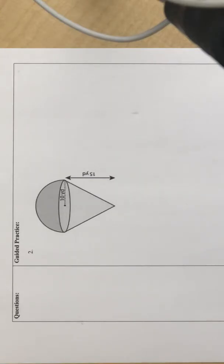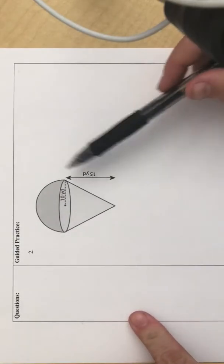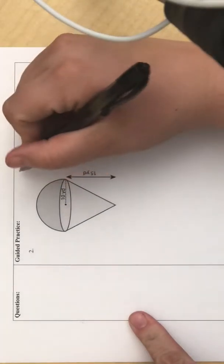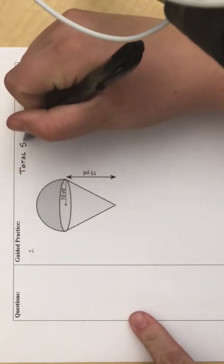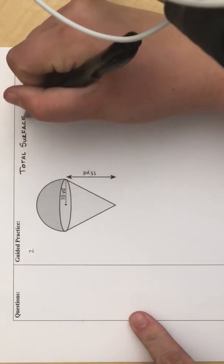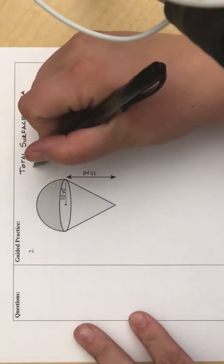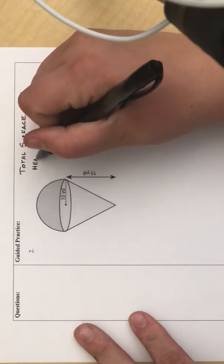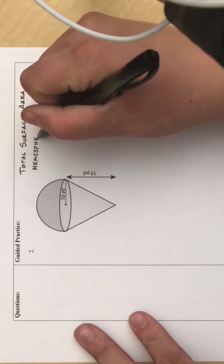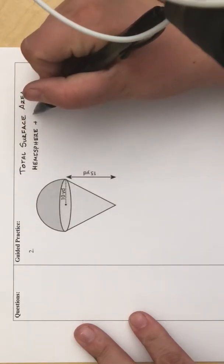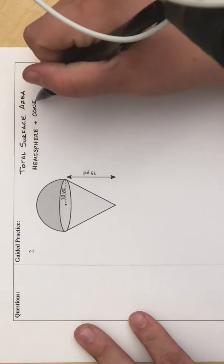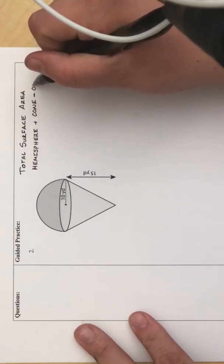Today we will be finding the surface area of this compound shape. What we have here is a hemisphere on top of a cone. So in order to find the surface area of this entire shape, what we need to do is find the surface area of the hemisphere plus the surface area of the cone, and then we are going to subtract the overlap.